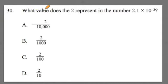It says, what value does the 2 represent in the number 2.1 times 10 to the negative third? Now notice, we have a couple different components here. One is scientific notation going on, and particularly negative scientific notation. It's 2.1 times 10 to the negative third power.